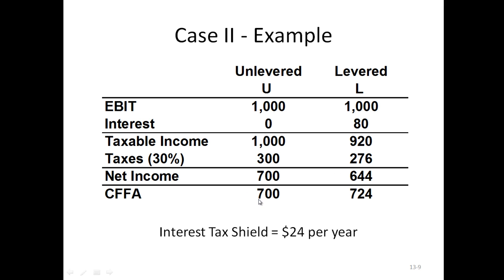So what we're really interested in is cash flow from assets. If we assume there's no depreciation, then cash flow from assets is simply going to be EBIT minus taxes. So in the unlevered case it's $1,000 minus $300, which is $700. In the case of the levered firm, it's EBIT minus $276, or $724. So there's $24 extra dollars in cash flow, and that comes from what we call the interest tax shield.